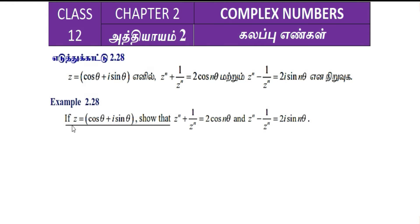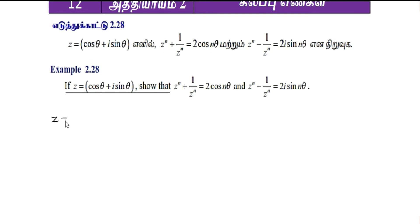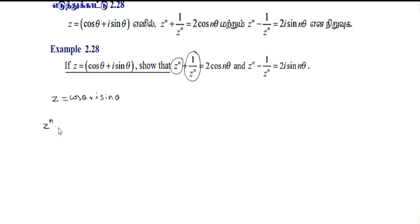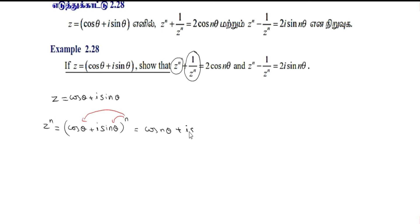Given z equals cos θ plus i sin θ. Raising to the whole power n, and using De Moivre's theorem — since we have the polar form and multiply the angle — we get z^n equal to cos(nθ) plus i sin(nθ).